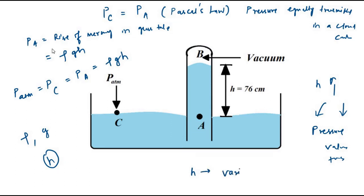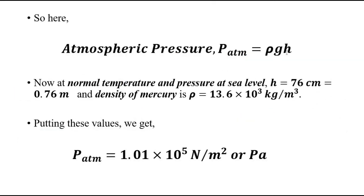h is the only variable parameter here because rho and g are constant. Normally for atmospheric pressure the height of mercury is 76 centimeters. The atmospheric pressure equals rho*g*h; rho and g are constant, and the height of mercury gives us the value of atmospheric pressure. At normal temperature and pressure at sea level, this height is 76 cm or 0.76 m. The density of mercury is 13.6 × 10³ kg/m³. Substituting these values gives atmospheric pressure as 1.01 × 10⁵ N/m² or Pascal.